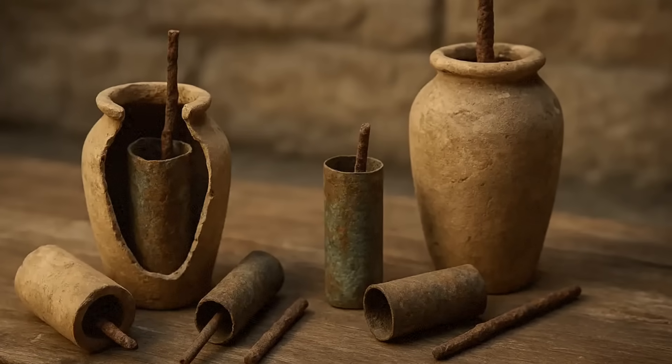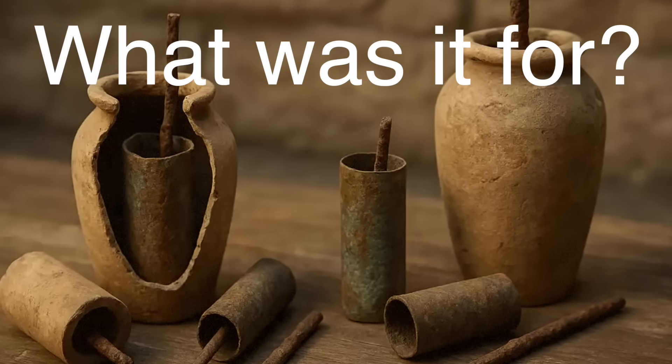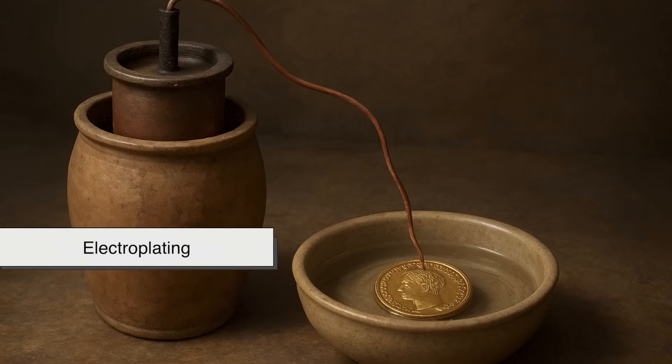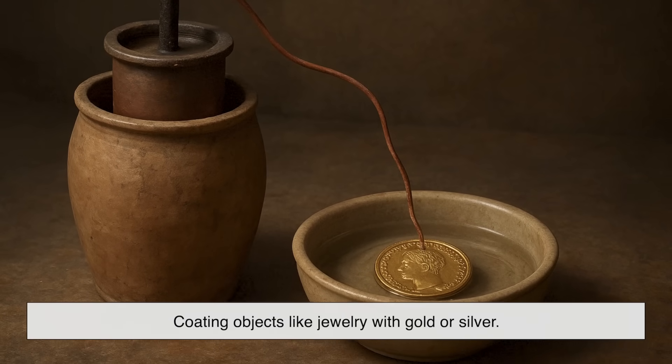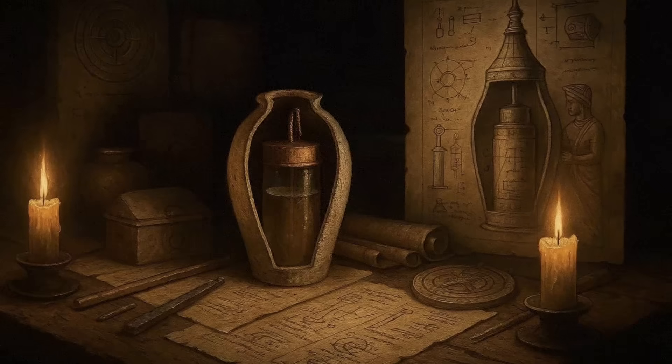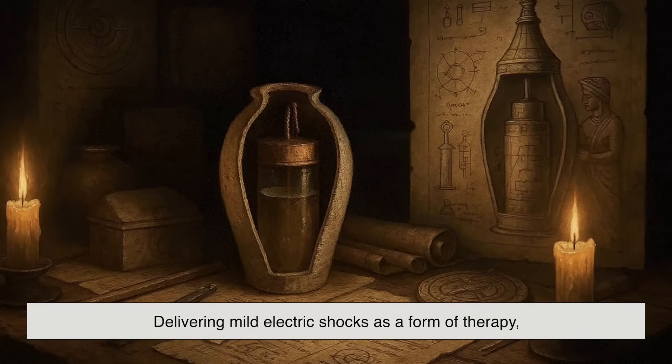So, if the Baghdad battery really worked, what was it for? This is where the mystery deepens. Some researchers believe it could have been used for electroplating, coating objects like jewelry with gold or silver. Others suggest it may have served as a medical tool, delivering mild electric shocks as a form of therapy, which we know other ancient cultures experimented with.